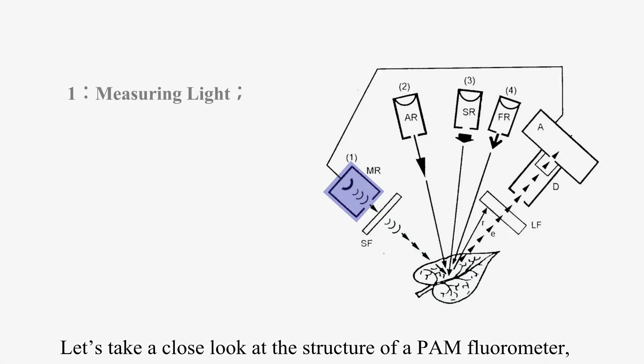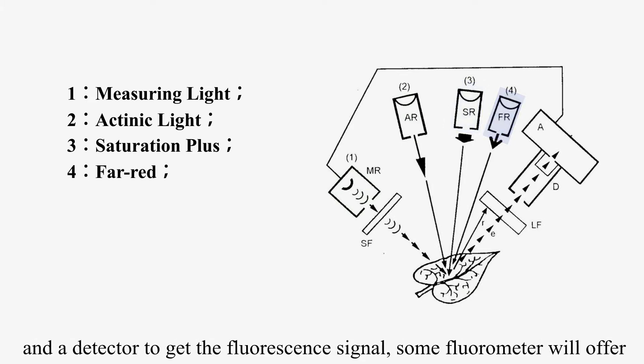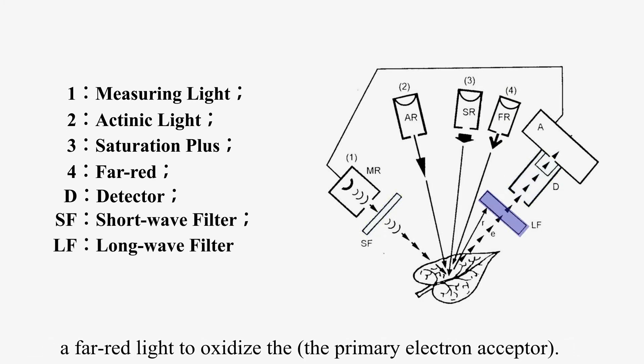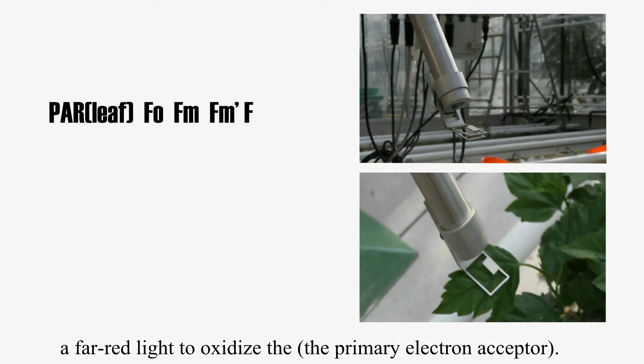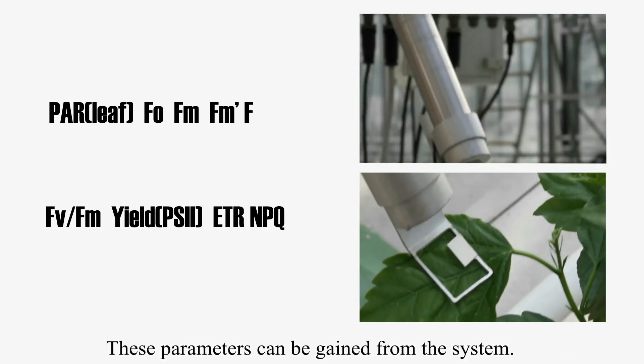Let's take a close look at the structure of a PAM fluorometer. Basically, it includes measuring light, actinic light, saturation pulse, and a detector to get fluorescence signal. Some fluorometers will offer far red light to oxidize the primary electron acceptor. These parameters can be gained from the system.